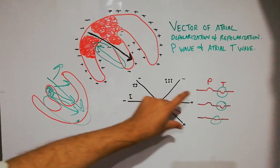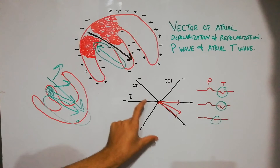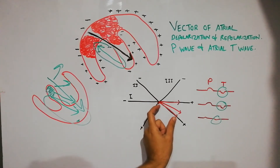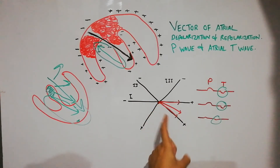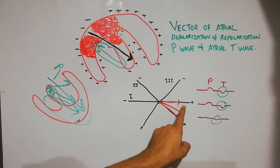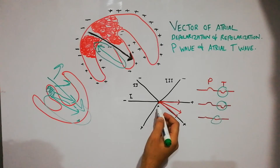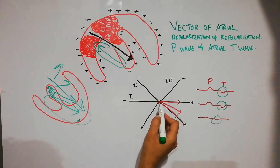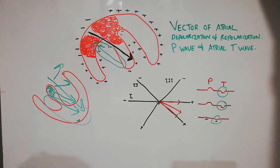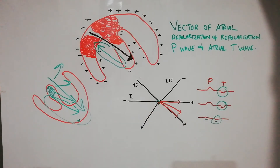If we plot this vector on all bipolar limb leads, we will see that it will have a good shadow on lead two and lead one, but on lead three its shadow will be very small. So the P wave shadow and the T wave of the atria have a very small shadow on lead three.